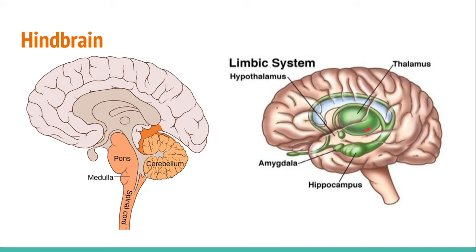The hypothalamus lies under the thalamus and is in charge of homeostasis, which is the ability to keep a system at a constant condition. It's also responsible for hunger, thirst, emotion, and circadian rhythms — your body's internal clock that determines when you go to sleep and wake up. The hypothalamus also has control over the autonomic nervous system — things happening in your body not directly directed by you, such as heartbeat, breathing, and the digestive process. Finally, the hypothalamus has control over the pituitary gland, a small pea-sized gland important for controlling growth and development.